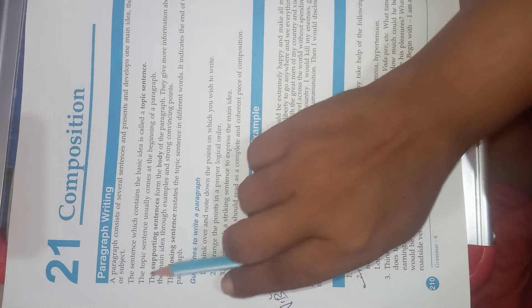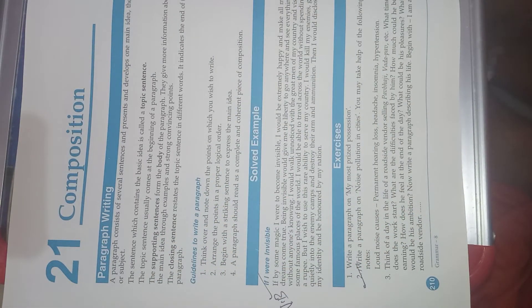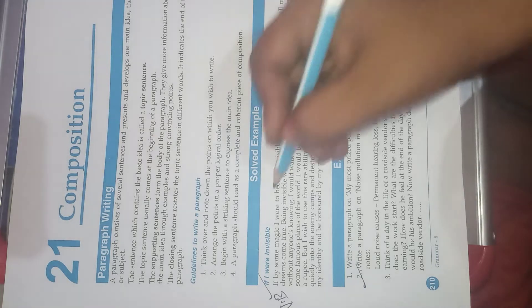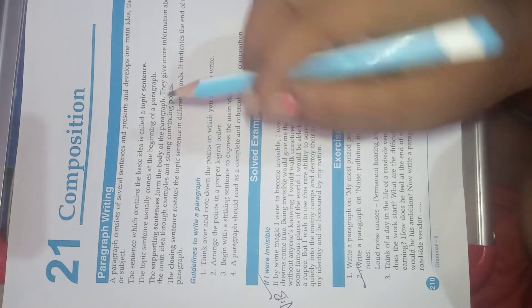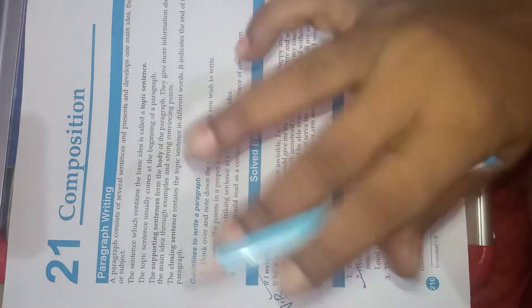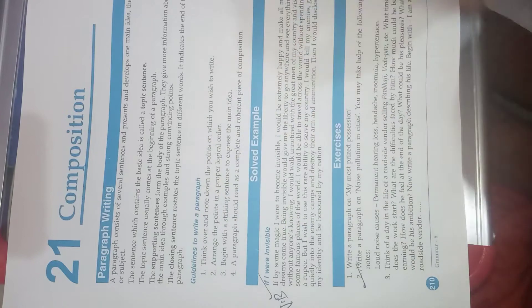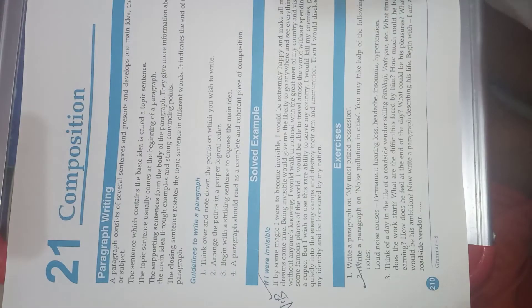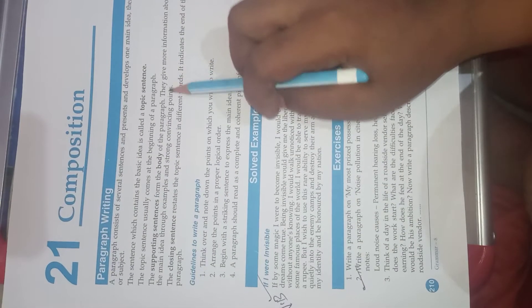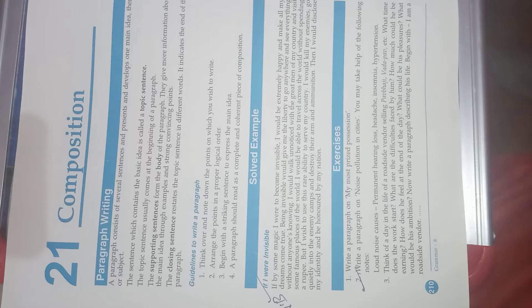The topic sentence usually comes at the beginning of the paragraph. It is an introduction to our theme and topic in the first sentence. It is very important to mention the first sentence. Supporting sentences form the body of the paragraph — they give more information about the main idea through examples and strong convincing points.